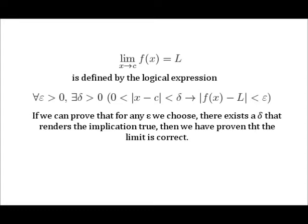The precise definition of the meaning of the statement — the limit as x approaches c of f(x) equals L — is: for all epsilon greater than 0, there exists a delta greater than 0, such that if the absolute value of x minus c is greater than 0 and less than delta, then the absolute value of f(x) minus L is less than epsilon.